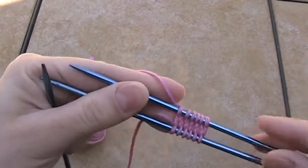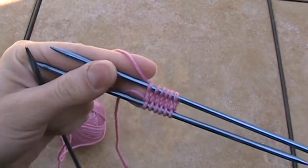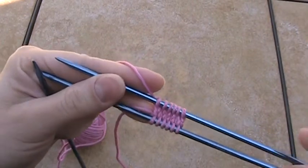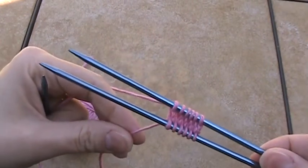So your second round will be an increase round. And then your third round is usually a plain round, and the fourth round is increase. So that's how you start your toe up socks. Thanks.